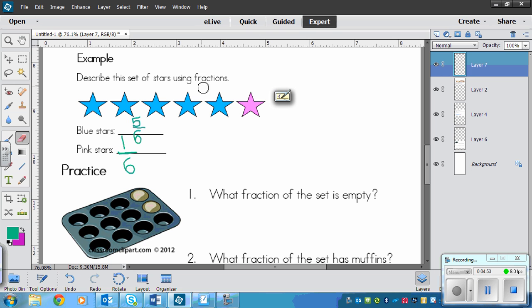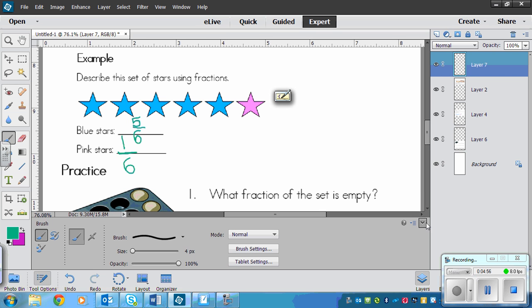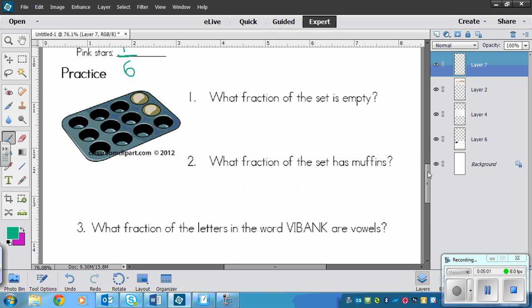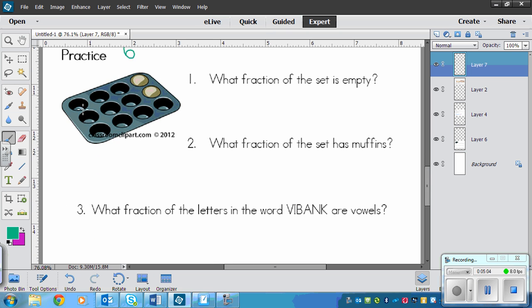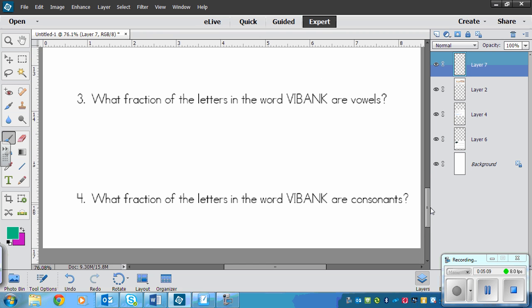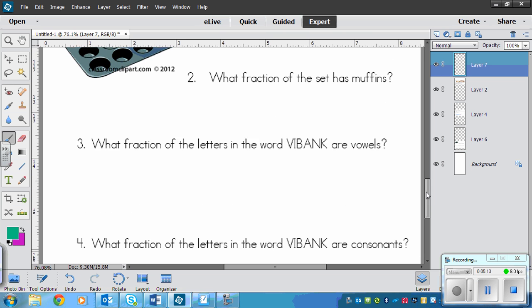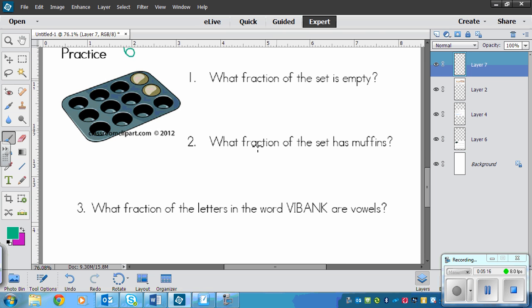I think this lesson is pretty straightforward for you, so please try the practice questions. There are four. One and two have to do with this muffin tin, and three and four have to do with the word VIBANK. You're still finding a fraction of a set, so each answer will have a fraction. Please pause the video now and then play again once you answered questions one to four in the practice.